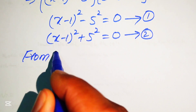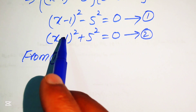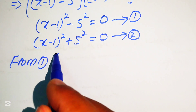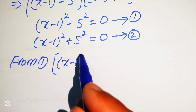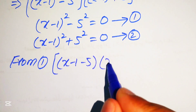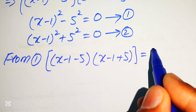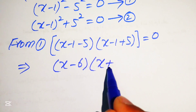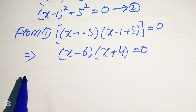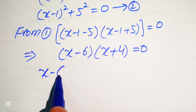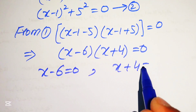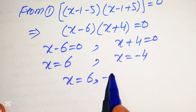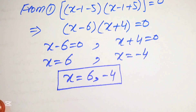Focusing on Equation 1, we apply the difference of squares formula again: (x-1-5)(x-1+5) = 0, which gives (x-6)(x+4) = 0. Setting each factor to zero, we get x = 6 and x = -4. These are the two real roots from Equation 1.